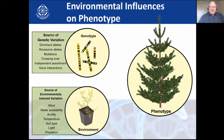Sources of genetic variation include dominant alleles, recessive alleles, mutation, crossing over, independent assortment, and gene interactions — but as we can see, the environment also plays a huge role.